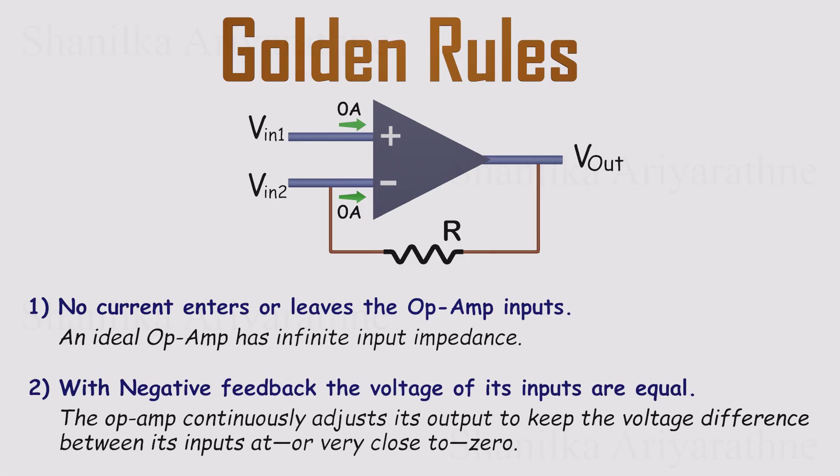Rule two, with negative feedback, the voltages at the inverting and non-inverting inputs are equal. The op amp constantly drives its output to keep their difference practically zero. These rules only hold when negative feedback is present. But when it is, predicting what the circuit will do becomes surprisingly simple.